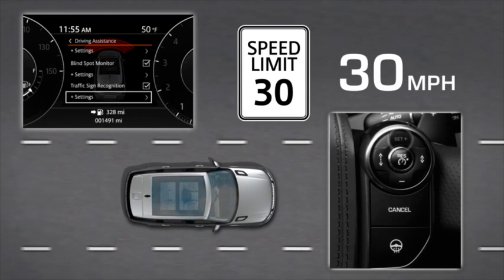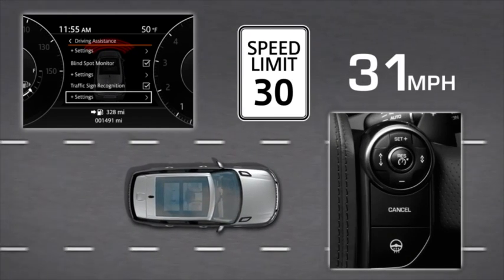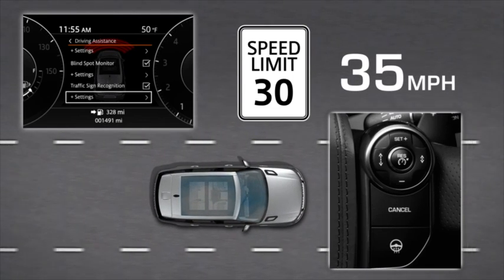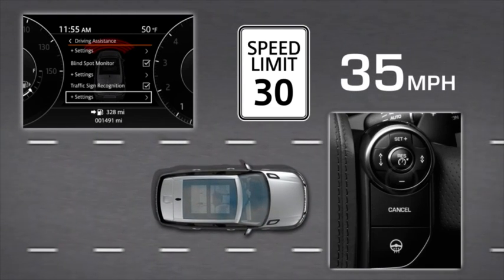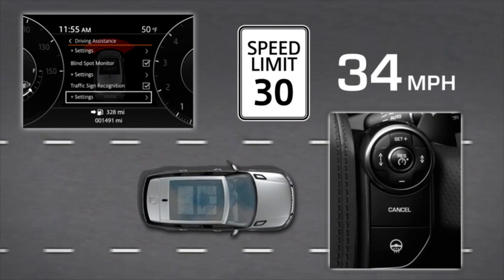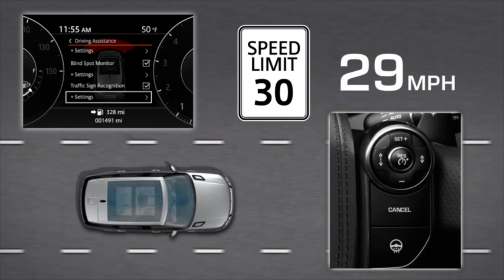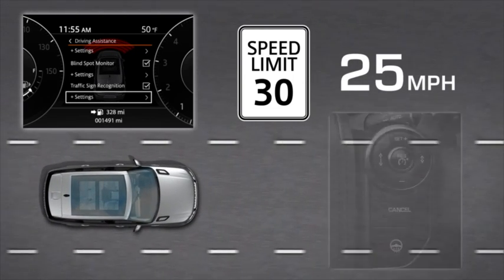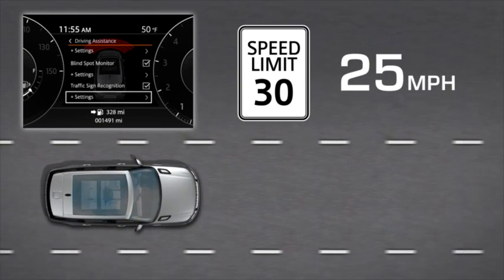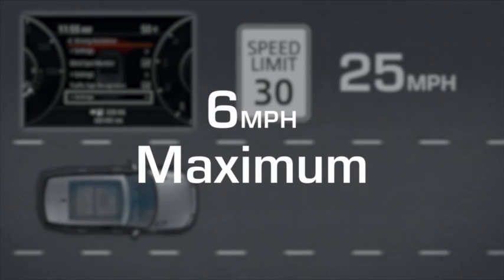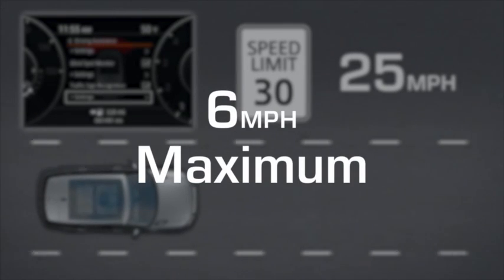Press the set button to raise the maximum speed above the detected speed limit. Press the minus button to lower the maximum speed below the detected speed limit. The maximum increase or decrease available is six miles per hour above or below the detected speed limit.